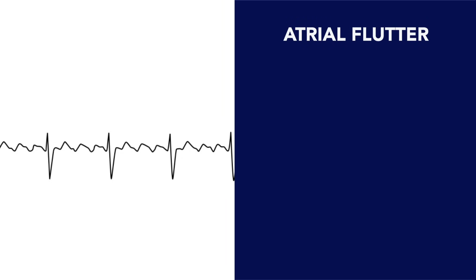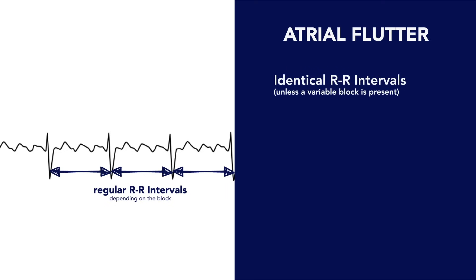So in summary, atrial flutter will typically show identical r-to-r intervals unless there are variable blocks.